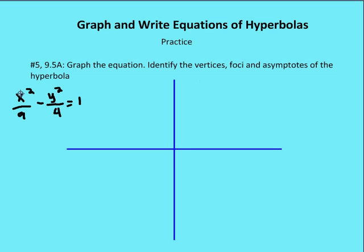The first thing we need to do is take a look at the equation. We know it's a hyperbola versus an ellipse because we have a negative value and one positive value. Also, we have both variables squared, so it's either going to be an ellipse or a hyperbola. We know it's a hyperbola because of this negative value. The second thing we need to do is figure out where it's centered. We can see, based on the fact that there's no translation in the numerator, that the equation is going to be centered at the origin.